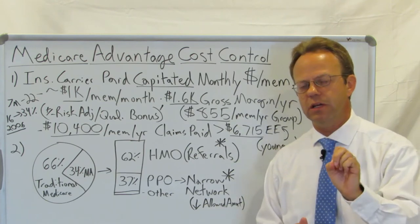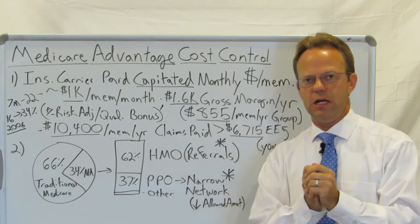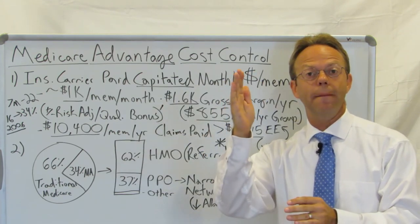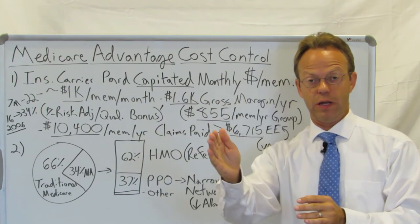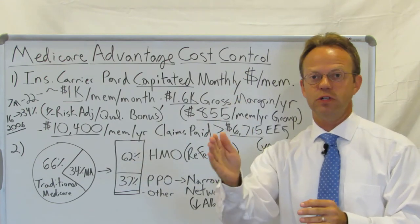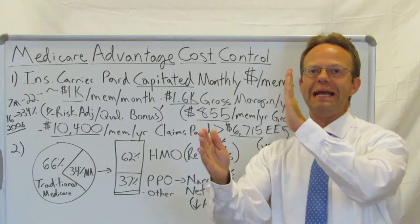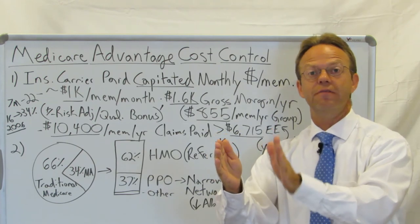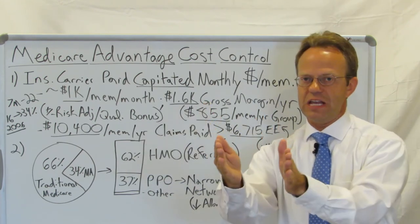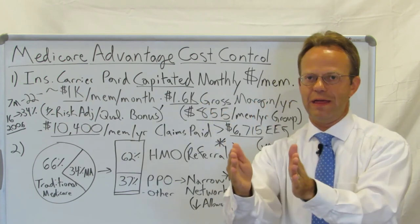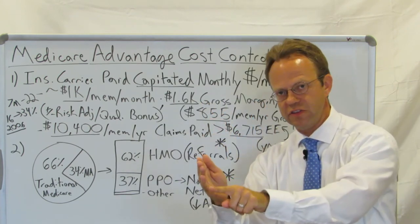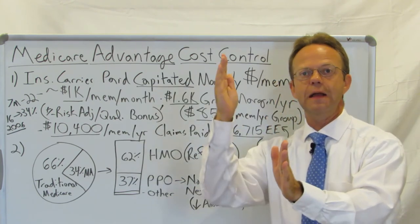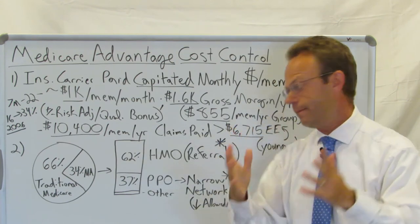It's important to note that when an insurance company negotiates a contract with a hospital, they will have one rate for their employer members and a different allowed amount for that same insurance carrier for their Medicare Advantage patients. Just because you both have the same insurance company and the same name on that insurance card, the reimbursement from the insurance carrier to the hospital is different if it's a Medicare Advantage plan versus an employer-sponsored commercial plan.